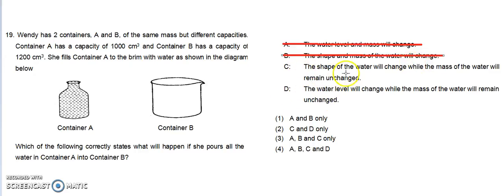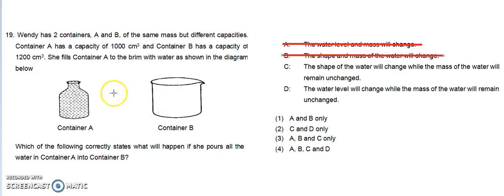Option C: the shape of water will change while the mass of water will remain unchanged. This is what we have been talking about. The shape of water will take the shape of container B, so the shape of water will change but the mass of water will remain unchanged as the volume of water remains the same. So C is a correct option.